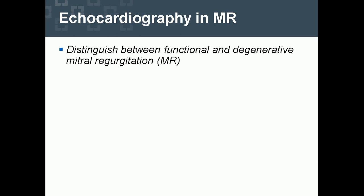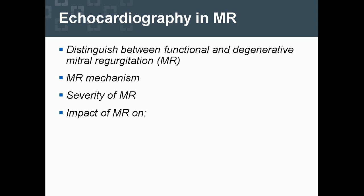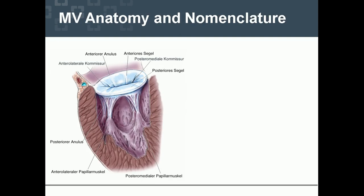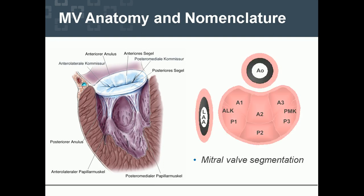The echo imagers should distinguish between functional and degenerative mitral regurgitation. Ask for the distinct mitral regurgitation mechanism, the severity of MR, and the impact on left atrial size and function, left ventricular size and function, pulmonary circulation, and the right heart. Most importantly, imaging cardiologists and surgeons have to speak the same language and use the same nomenclature.